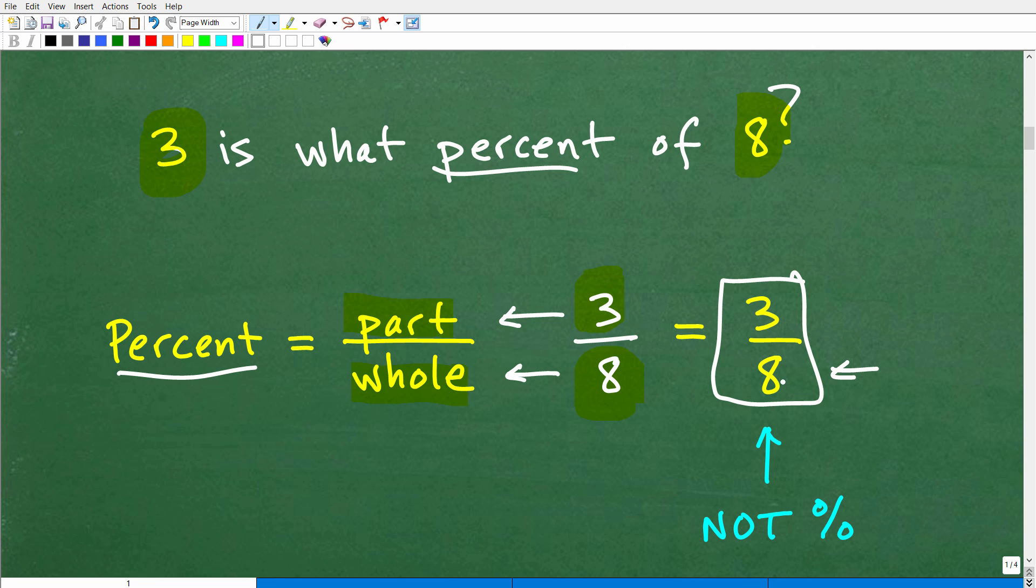Our answer is 3 over 8, but our answer is in fraction form, not percentage. We want to express a fraction as a percent, and let's go ahead and do that now.